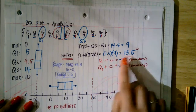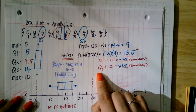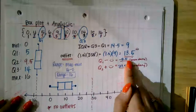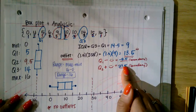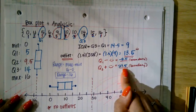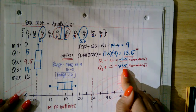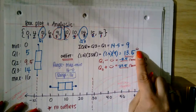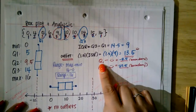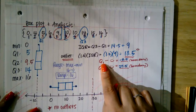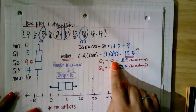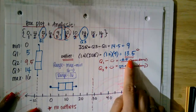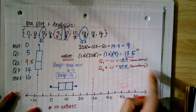Outliers are values that exceed a distance of 1.5 times the interquartile range from Q1 or Q3. So 1.5 times nine equals 13.5. Subtracting from Q1: five minus 13.5 gives negative 8.5. Adding to Q3: 14 plus 13.5 gives 27.5. Those are my outlier boundaries — any data beyond negative 8.5 or 27.5 would be an outlier.